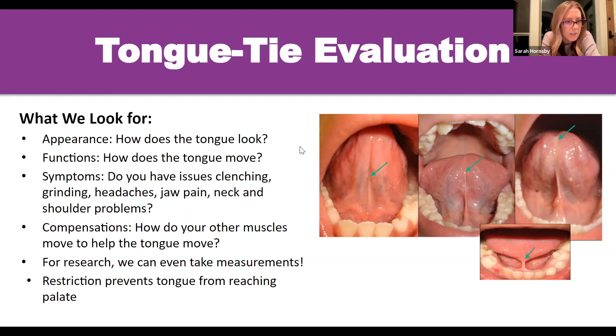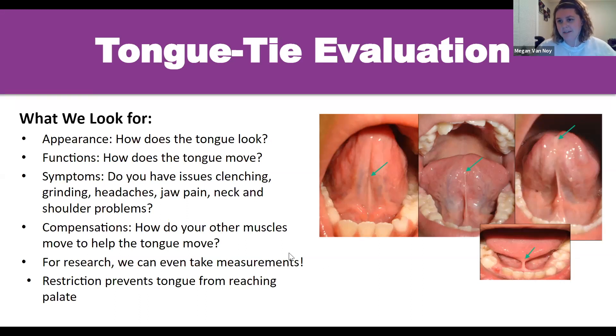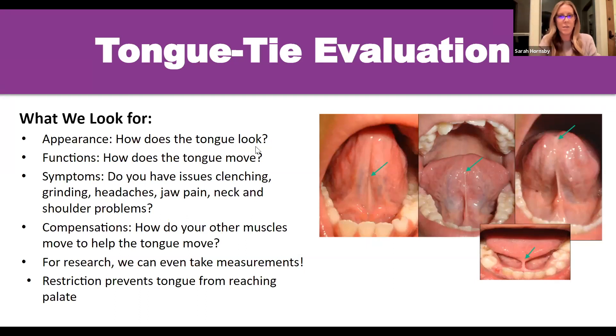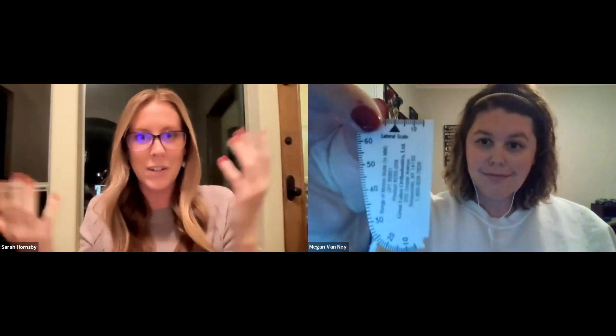The measurements are only one of the five pillars. We do want to take measurements — the tongue range of motion is a measurement, the Kotlow free tongue measurement is a measurement — and we need that.